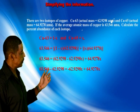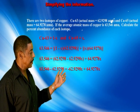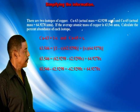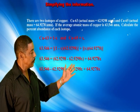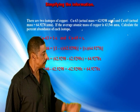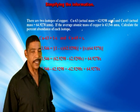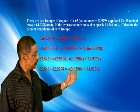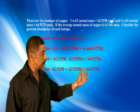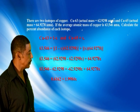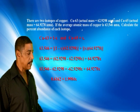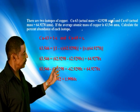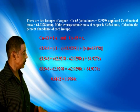This gives 63.546 minus 62.9298 on the left side. On the right side, the 62.9298 terms cancel, leaving negative 62.9298x plus 64.9278x, which equals 1.9984x. And 63.546 minus 62.9298 is equal to 0.6162.